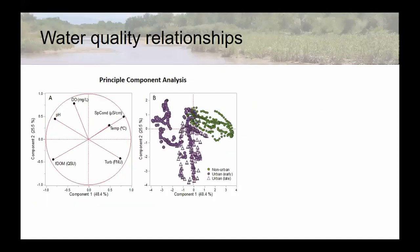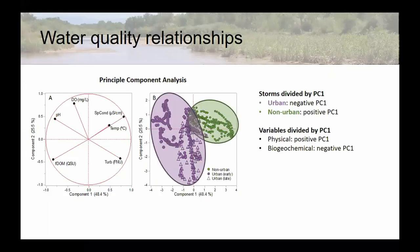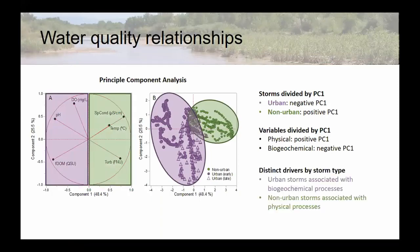Looking at the water quality relationships, this is principal component analysis. Basically, you take a multivariate dataset and dimensionally reduce it. Here we've chosen two components. The first component, on the X axis, explains about half of the variability in the dataset. The second component explains about a quarter. The green dots — non-urban events — separate out towards positive PC1. Urban events separate out towards negative PC1. Physical parameters like temperature, specific conductivity, and turbidity load towards positive PC1, while our biogeochemical variables — DO, pH, and FDOM — load towards negative PC1, associated with urban storms.